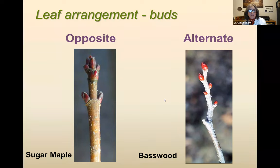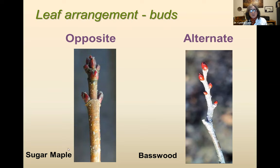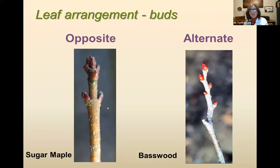If you're doing winter ID — like when cutting firewood — you're often looking at plants when there are no leaves. So the bud arrangement is good to look at, since that's essentially where the leaves are going to come out anyway. Sugar maple buds will be opposite, whereas basswood buds will be alternate, just like the leaves. In the Midwest, if you see opposite buds, start by looking to see if it's a maple or an ash — they are two of the most common trees with opposite buds. There are exceptions, but that can be a really easy way to get started.